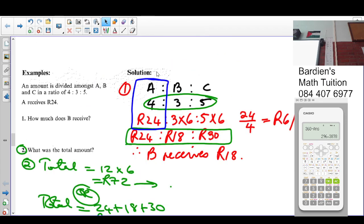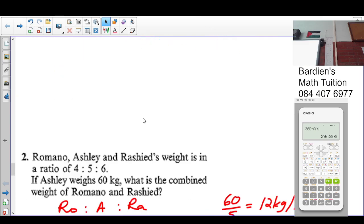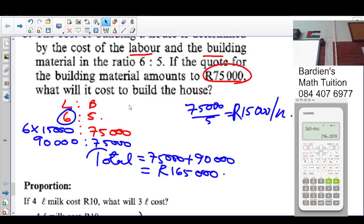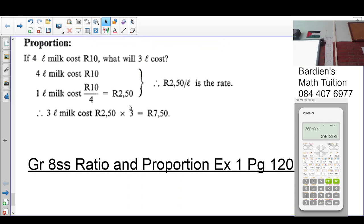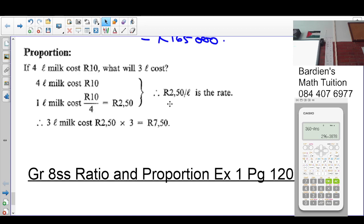Whilst when we're talking about proportion, we compare different quantities. Here we got money and we got liters. Okay, can you see that people? So therefore, 3 liters will cost 3 times 2 rand 50, which is 7 rand 50.